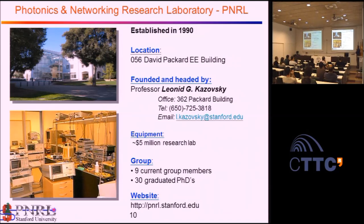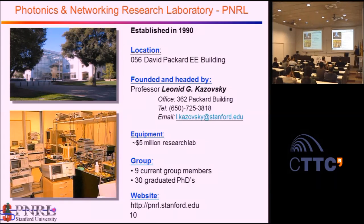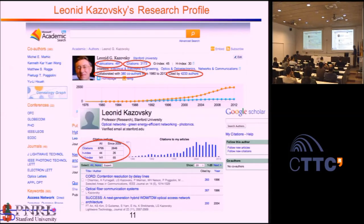Going now to my group, Photonics and Networking Research Laboratory — I established it back in 1990 when I left Bell Labs to join Stanford. We have a nicely equipped lab; it was not simple to establish and to raise the money for all this equipment. At the moment we have nine group members and have graduated about 30 PhDs. If you go to Microsoft or Google and type in my name, it can tell you everything you ever wanted to know — what papers were most cited, in what year, by whom. Much to my surprise, papers I thought would be most frequently cited are not, and the other way around.